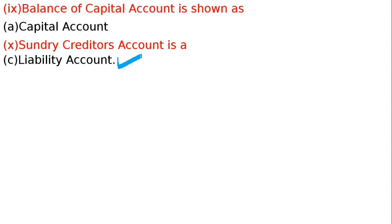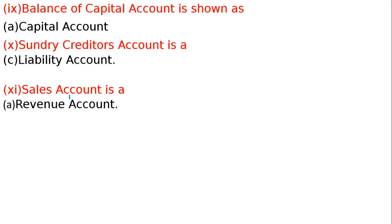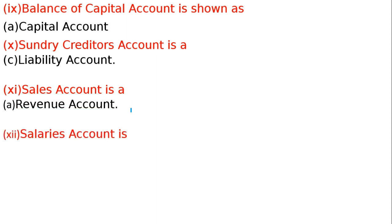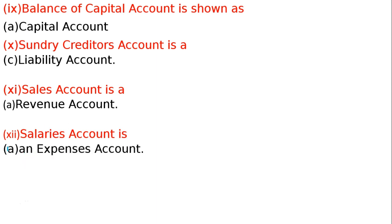11th question: Sales account kya hai? Sales account ka nature kya hota hai? From the four alternatives, sales account is a revenue account — sale karenge to hamari revenue yaani kamai hogi, to sales account is a revenue account. 12th question: Salaries account — hum salary pay karte hain, salaries account is an expenditure or expense account. Option A is the correct answer: salaries account is an expense account.